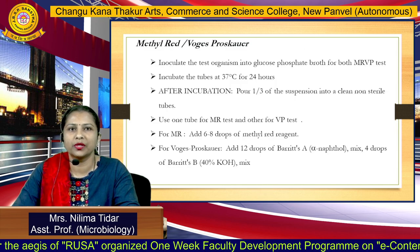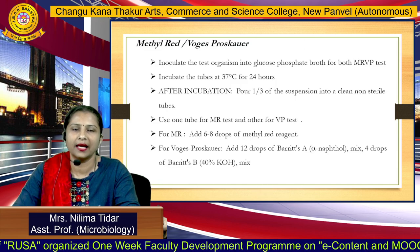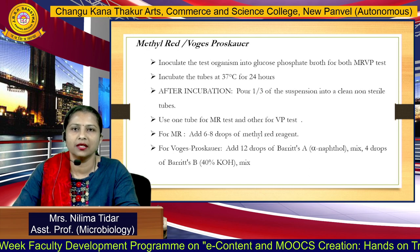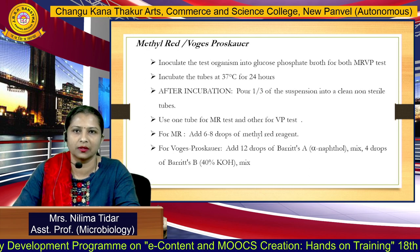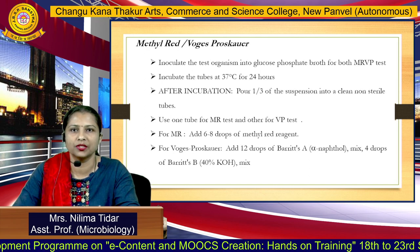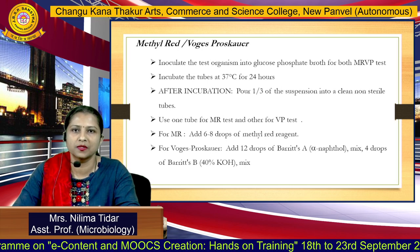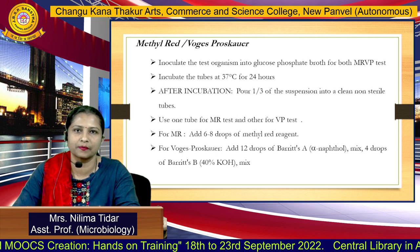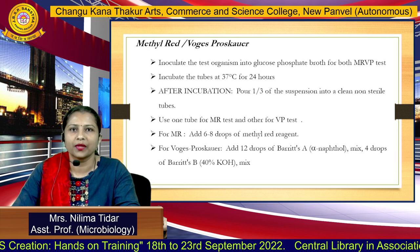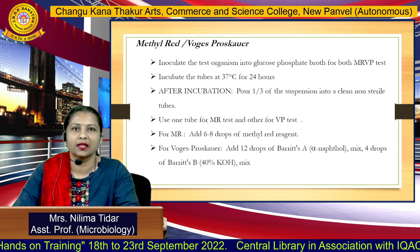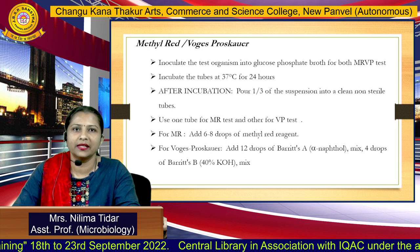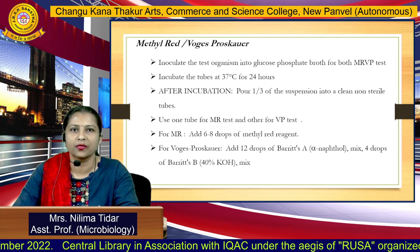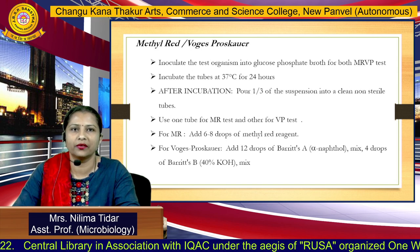We will now move on to the next test: Methyl Red and Voges-Proskauer test. For performing these two types of tests, we carry out inoculation in a common broth called Glucose Phosphate broth. After incubation, we divide this broth into two tubes and add different reagents for observing either the Methyl Red or Voges-Proskauer test. The tubes are incubated at 37 degrees centigrade for 24 hours.